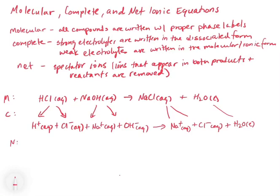Okay, so now let's look at the net ionic form. So the net ionic form of this is going to be where we get rid of the spectator ions. So spectator ions, the definition for those are ions that appear in both the products and the reactants. These are removed in the net ionic.